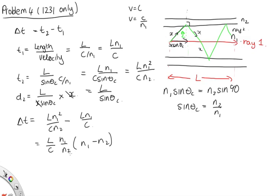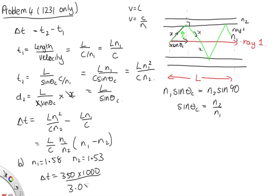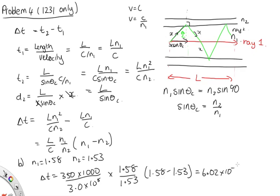Part B evaluates this for the same fiber as problem 3: N1 = 1.58, N2 = 1.53, and a fiber length of 350 kilometers. Substituting in: (350 × 1000) / (3.0 × 10⁸) × 1.58 × (1.58 − 1.53) / 1.53, which gives 6.02 × 10⁻⁵ seconds, or 60.2 microseconds. That's the answer to this problem.